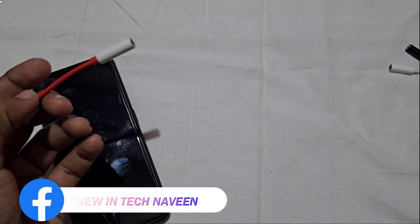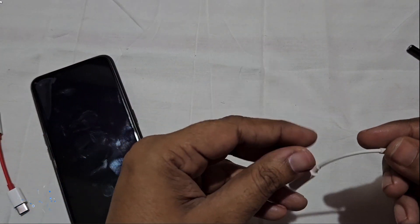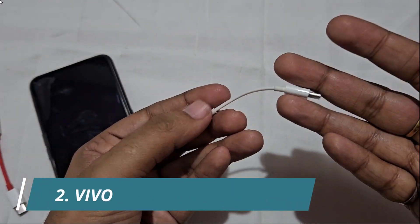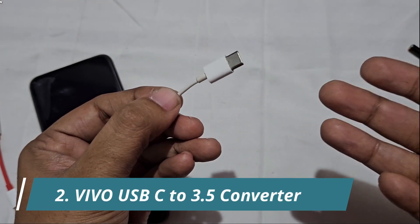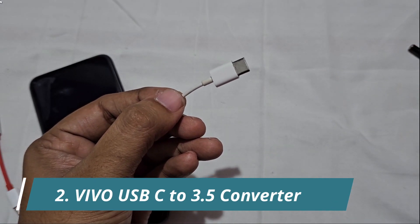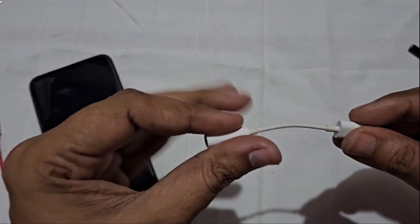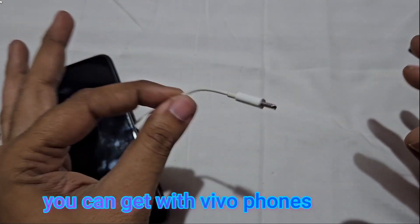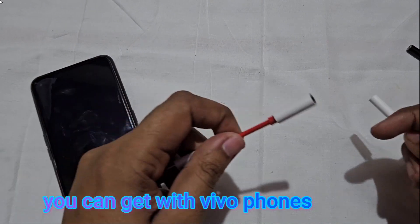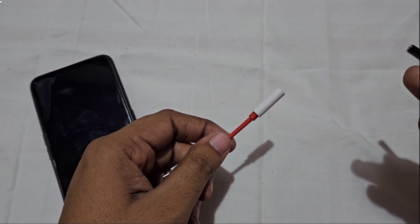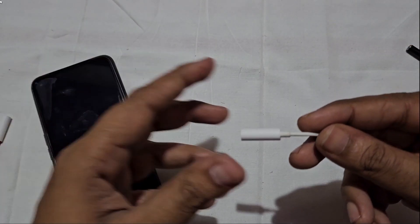Second ranking is the Vivo converter, 3.5 to USB-C converter. It has great quality. OnePlus is almost 9.5 out of 10, and Vivo gets 9 out of 10.